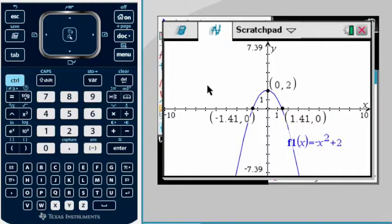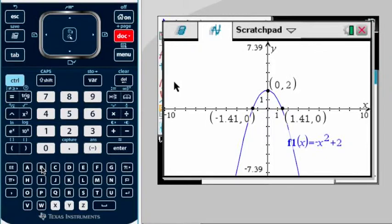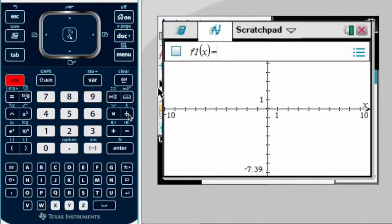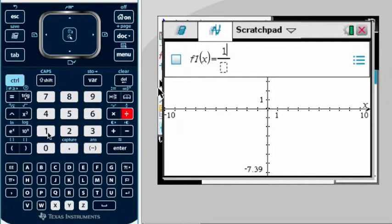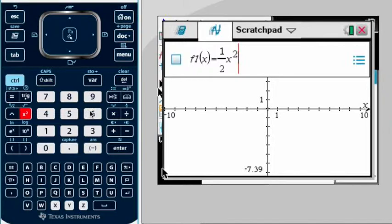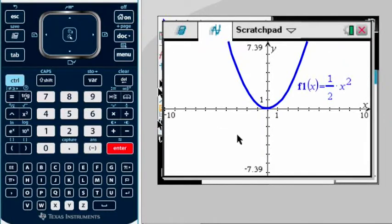So remember, you do still have to be able to identify if what you have is a minimum or a maximum. So I want to do one more example. Scratchpad to start again. And I want to show you this one: y equals we're gonna do a fraction, one half x squared.